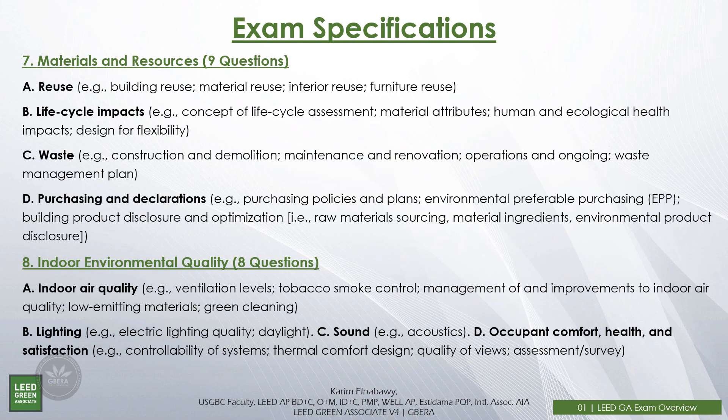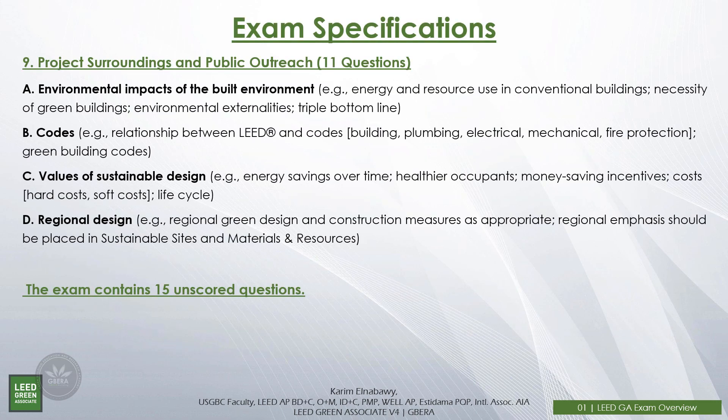Materials and resources has 9 questions covering reuse, life cycle impacts, waste, and purchasing and declarations. Indoor environmental quality has 8 questions covering indoor air quality, lighting, sound acoustics, and occupant comfort, health and satisfaction. The last category is project surroundings and public outreach, which you can find in the conclusion video for each chapter. It includes environmental impacts of the built environment, codes and standards, values of sustainable design, and regional design. There is also a specific chapter for regional priority that relates to this category.